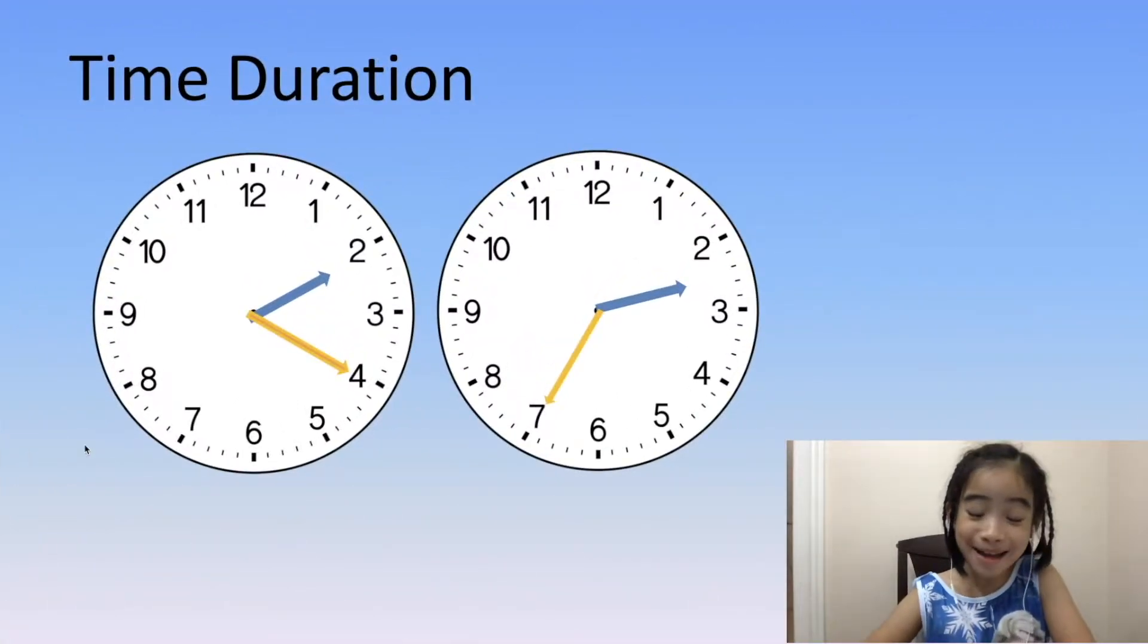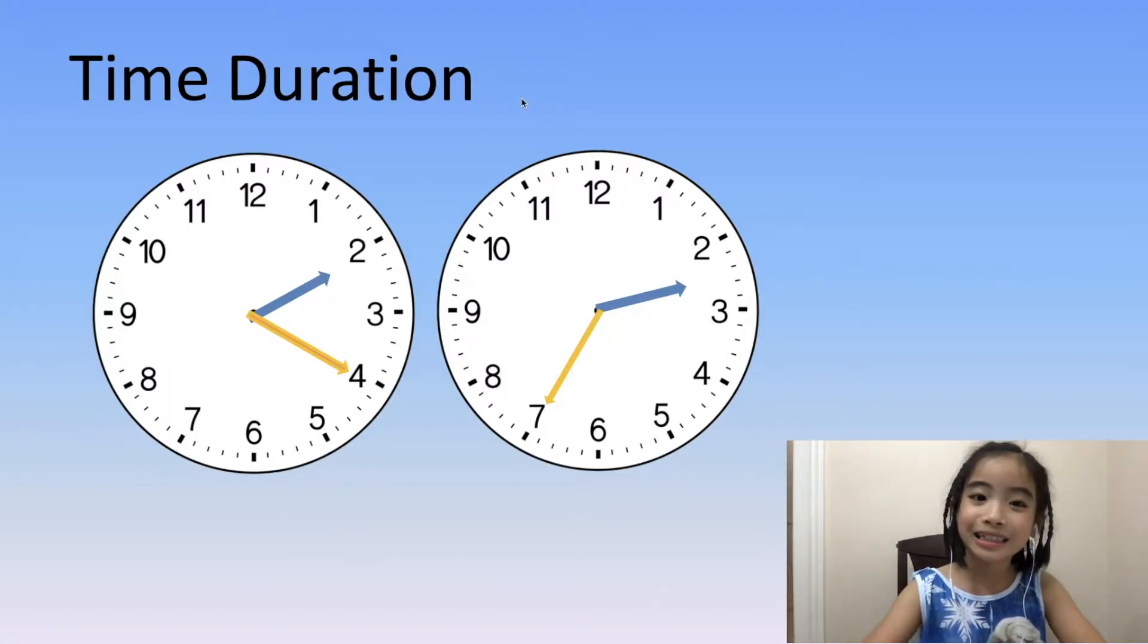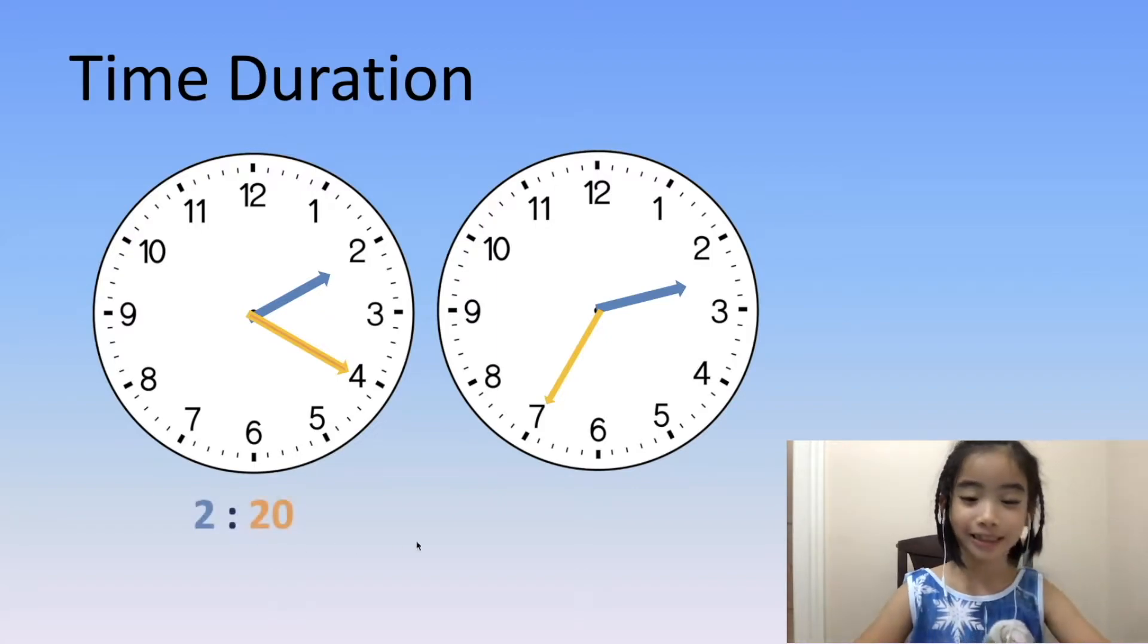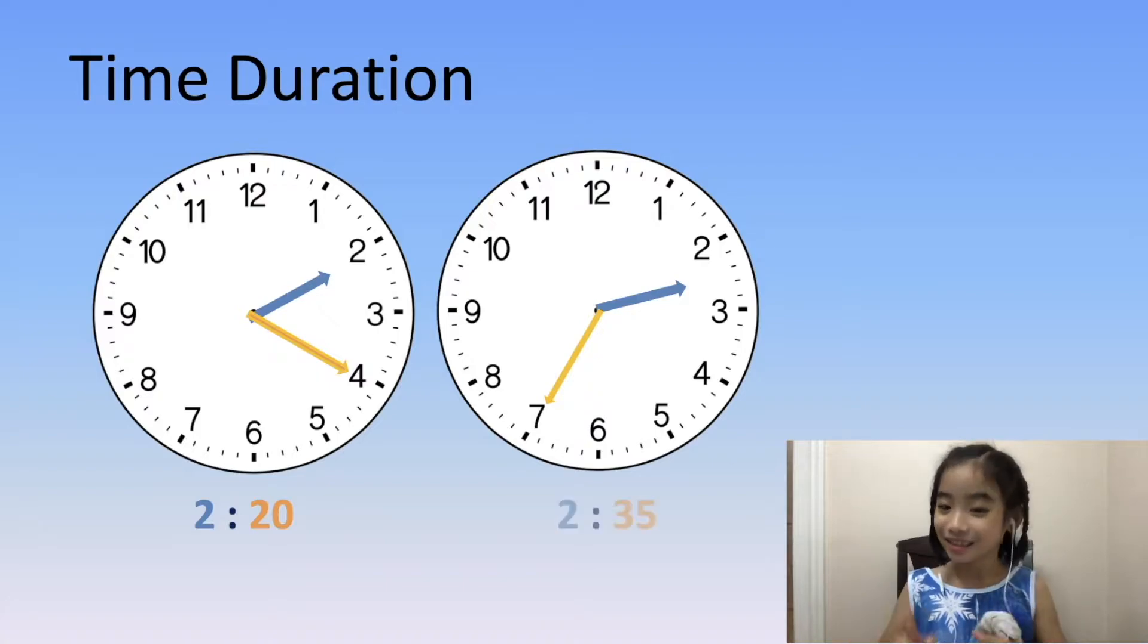For all of these examples, let's just say that they are the same morning or the same afternoon. So here are two clocks. We need to figure out how many minutes have passed. On the one to the left, it's 2:20, and the clock to the right is 2:35.